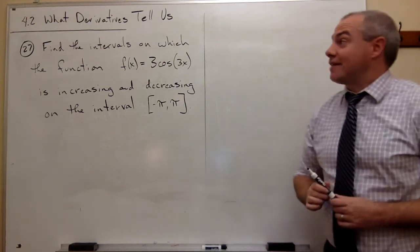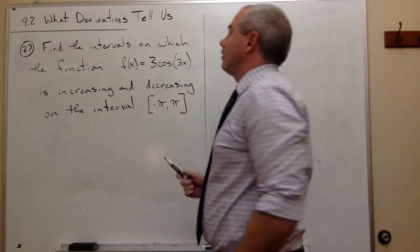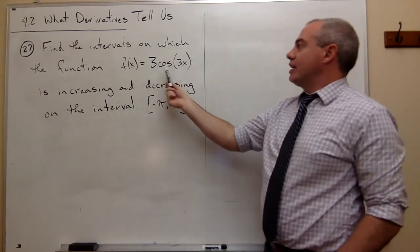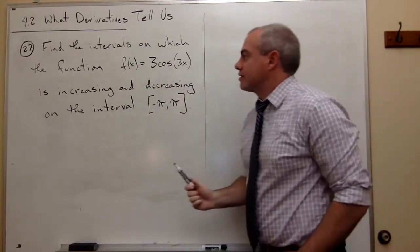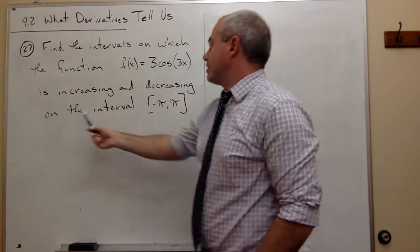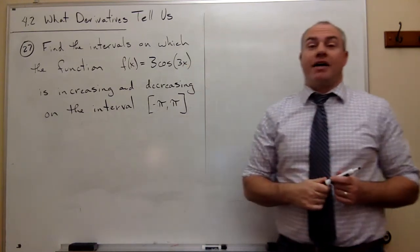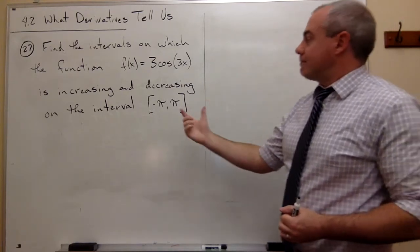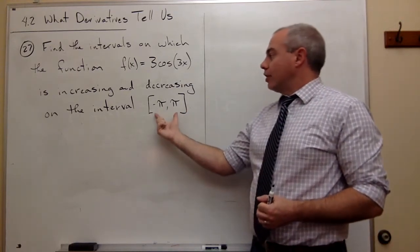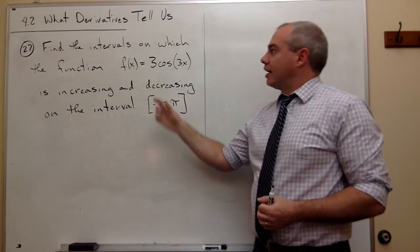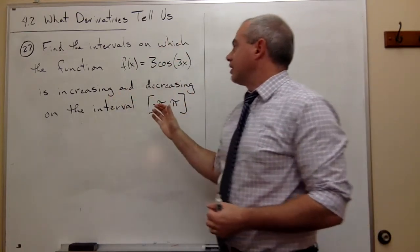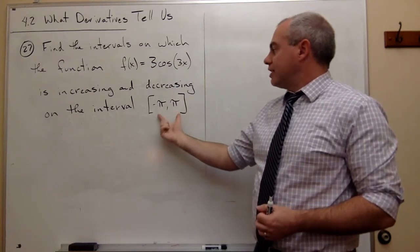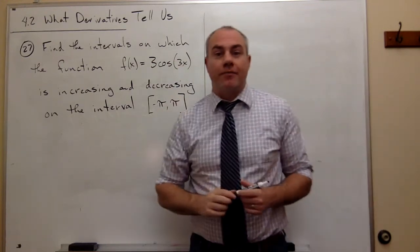In problem number 27, I'd like to find the intervals on which the function f of x equals 3 cosine of 3x is increasing and decreasing on the interval negative pi to pi. So what's different about this problem is we actually have an interval on which we want to figure out where it's increasing and decreasing. I'm only interested in values that are in between negative pi and pi.